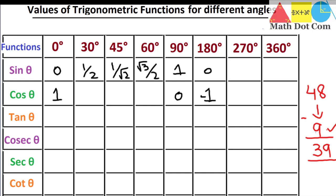Now cos 30, 45, and 60 — these three values will be derived from sine 30, 45, and 60. Cos 30 will be root 3 over 2, derived from the value of sine 60. Cos 45 is the same as sine 45, that is 1 over root 2. Then cos 60 is the same as sine 30, so it will be 1 divided by 2. This is how we derive these values.